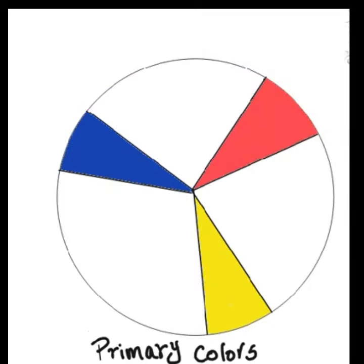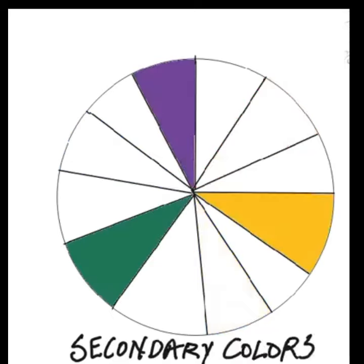Primary colors are red, yellow, and blue. Secondary colors are orange, green, and purple.